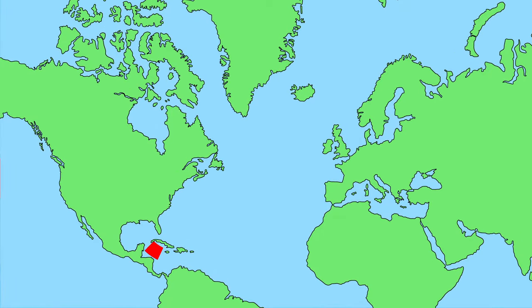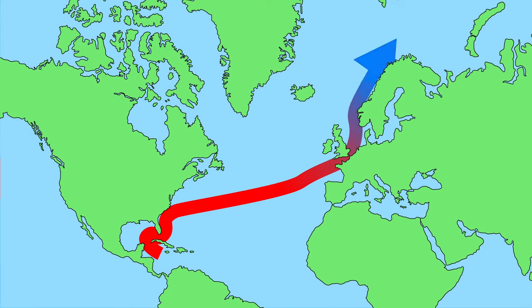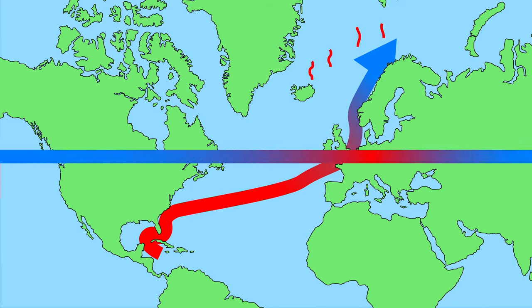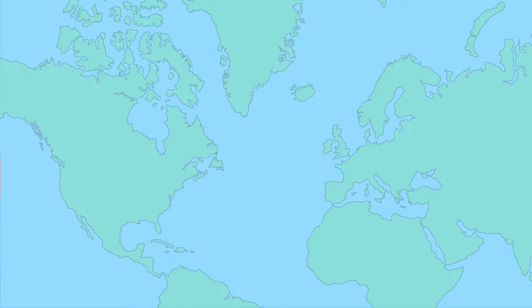Warm sea currents emit a lot of heat. Warm water is moved from the Gulf of Mexico to Western Europe — this warm ocean current is called the Gulf Stream. The Gulf Stream makes Western Europe much warmer than other places at the same latitude. The North Pole also receives a lot of energy in this way.